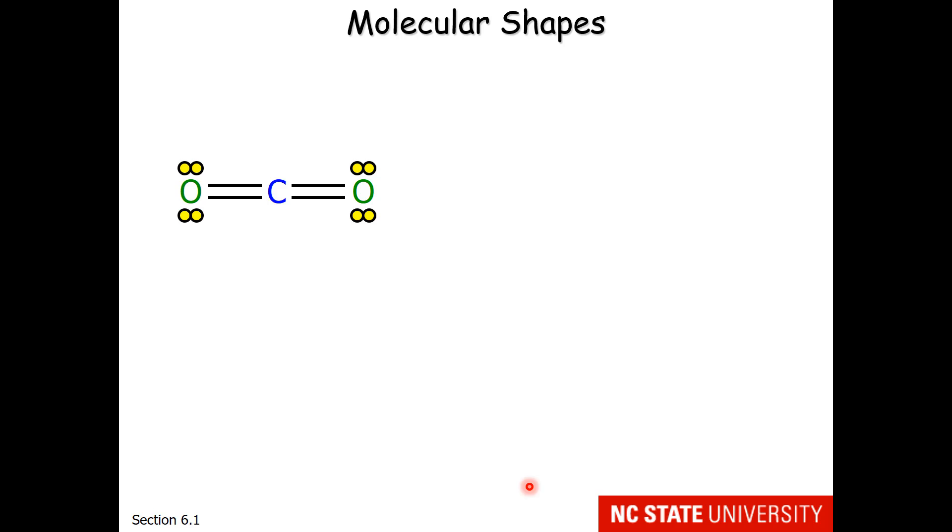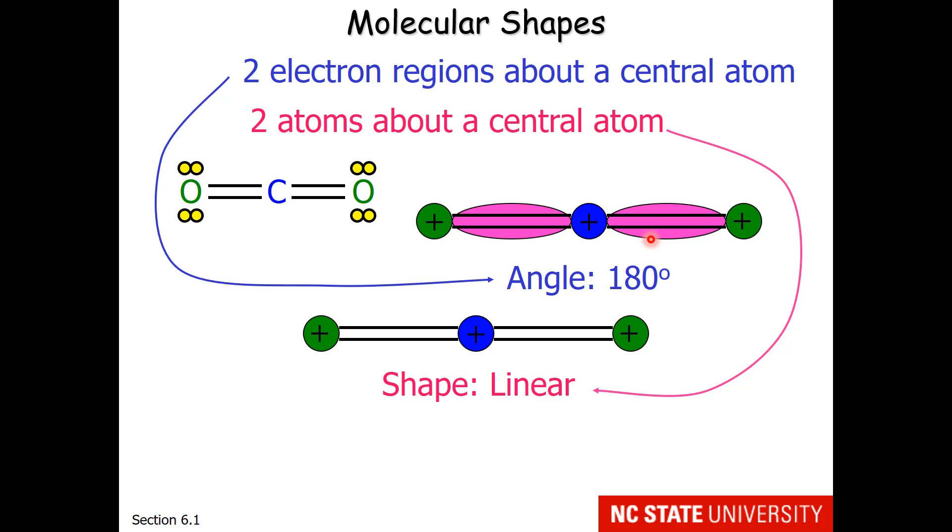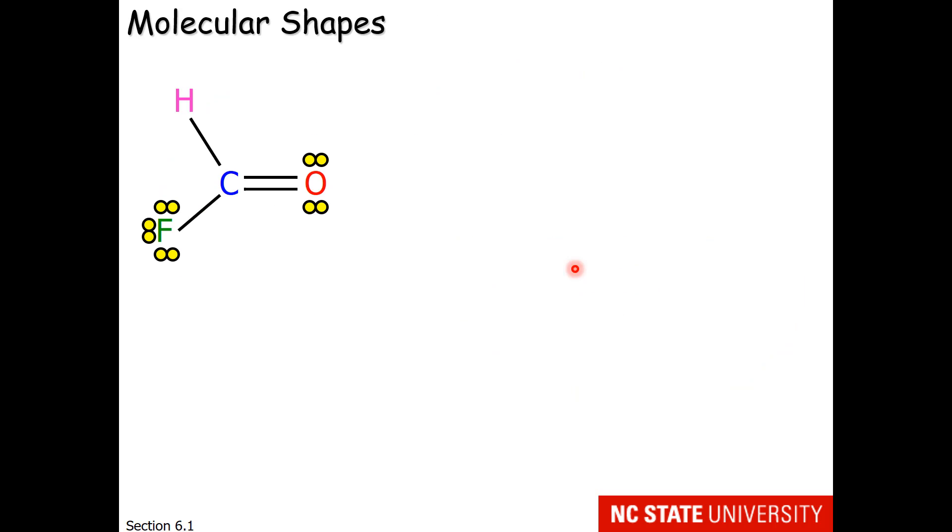We will start with the easiest, carbon dioxide. Carbon dioxide has two electron regions, a double bond and a double bond. So that means that the electron clouds are going to orient at 180 degrees from one another. This is the carbon, and these are the two oxygen atoms. The pink is the electron clouds. So we will call that shape linear and that bond angle 180 degrees.